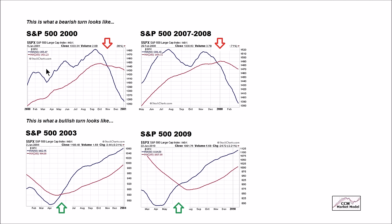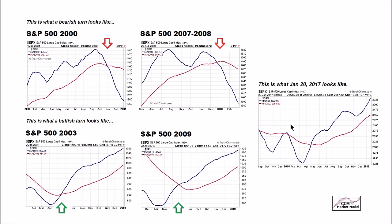If we use the standard 50-day in blue and 200-day in red — with blue helping us with intermediate-term trends and the 200-day in red helping us with longer-term trends — we can compare the present day to bearish turns and bullish turns at major turning points. If we understand what the market looks like at major turning points, it gives us some insight into the risk-reward profile in the present day. Looking at the same 50-day and 200-day as of January 20th, there's no question the present day looks more like a bullish turn than a bearish turn.